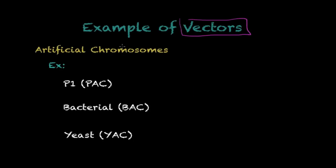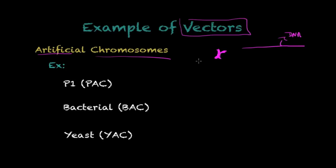The last type of vectors I want to discuss are artificial chromosomes. A chromosome is a packed DNA molecule — if you take a long DNA molecule and pack it very tightly, it creates a chromosome. Artificial chromosomes are created or manipulated in a lab setting and are used for DNA cloning. You can introduce your DNA fragment into these chromosomes and replicate them to obtain the DNA clones of the fragment you want to study.